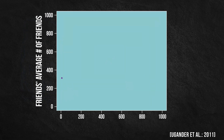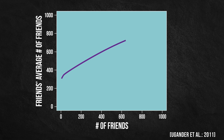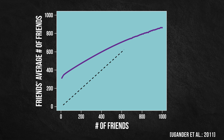This plot shows an individual's friends' average number of friends versus the individual's own number of friends. For example, if you have 400 friends, then your friends on average are expected to have 600 friends. The diagonal line corresponds to having the same number of friends as your friends do. And as you can see, until you have nearly 800 friends, your friends on average are expected to have more friends than you do.